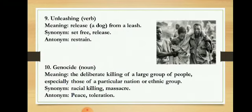Next is Unleash — used as a verb. When you keep animals in chains or restraints and then release them, that is called unleashing. It means releasing from restraint — especially used for dogs. Synonyms are set free and release; antonyms are restrain.